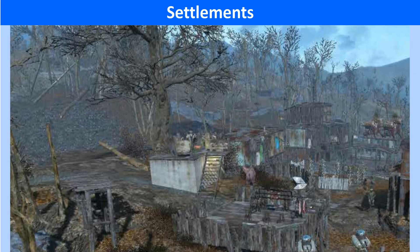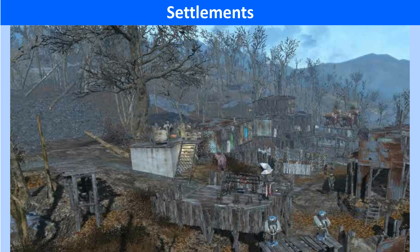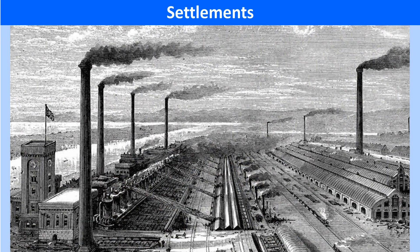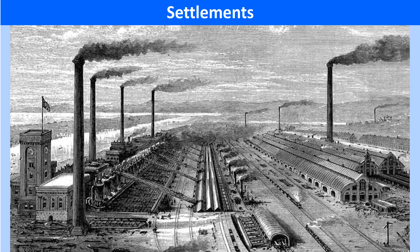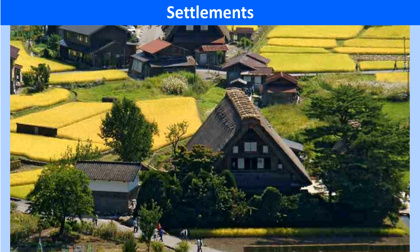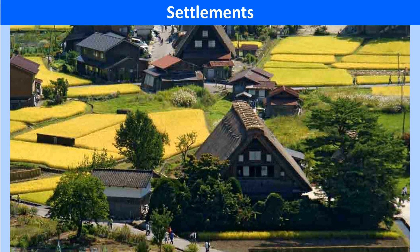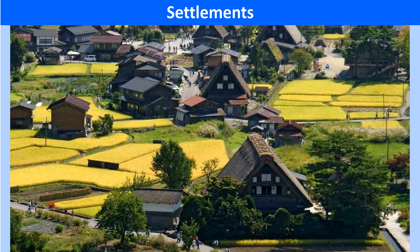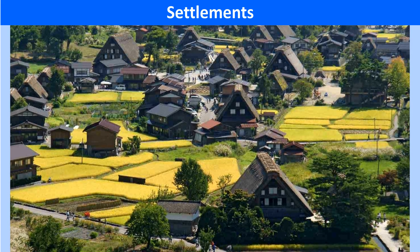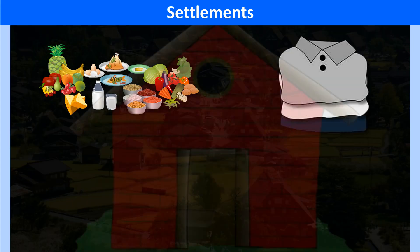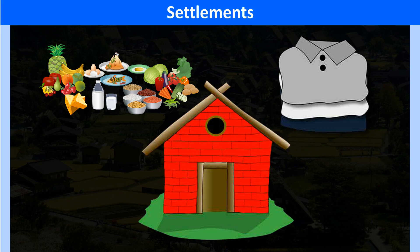Settlements. The interaction between human beings and nature has resulted in the development of the human environment. The Industrial Revolution accelerated the growth and spread of human civilization. Thus, settlements grew from tiny hamlets to villages, towns and cities as communities began to set aside areas for work, worship, administration and recreation. Along with food and clothing, shelter is a basic need of humans. Shelter leads to the growth of settlements.